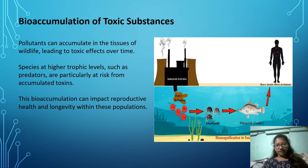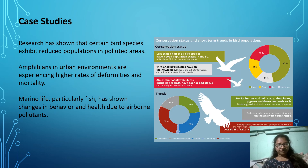Industrial activities contribute to water pollution and exposure to heavy metals, affecting humans as well. Case studies have shown that certain bird species exhibit reduced populations in polluted areas. Amphibians in urban environments are experiencing higher rates of deformities and mortality. Marine life, particularly fish, has shown changes in behavior and health due to airborne pollutants.